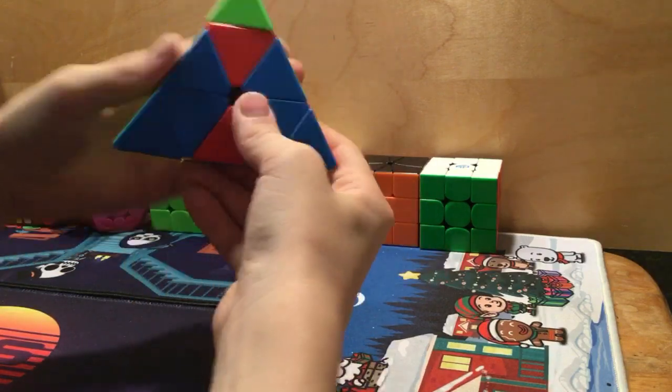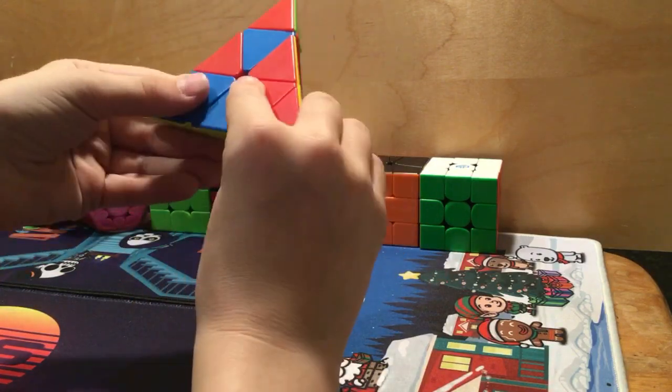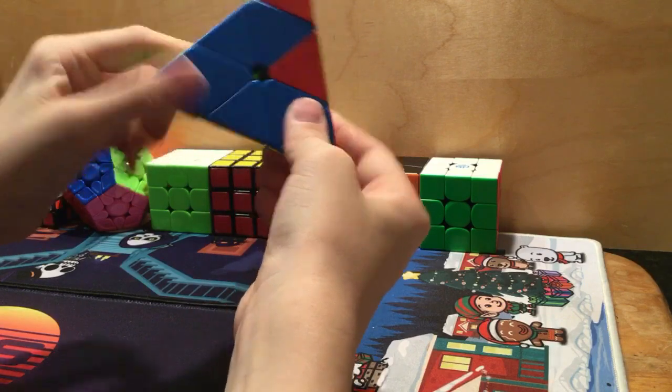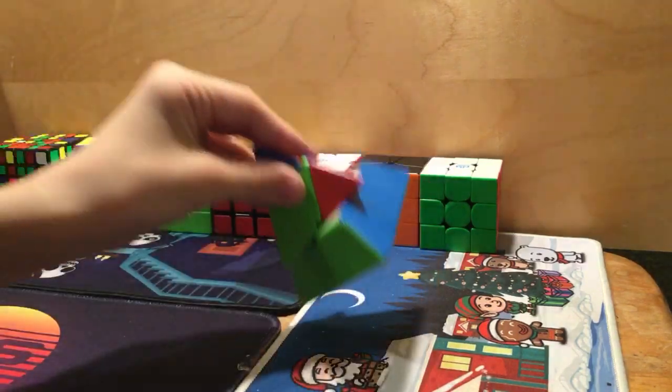And then the last one is blue. And it's on this side. So you do the right-handed sledgehammer. Now you'll see that you have the first layer done.